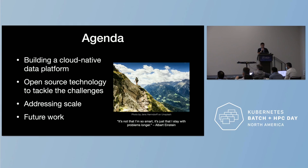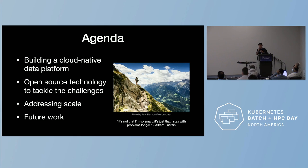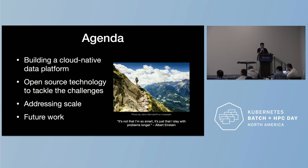Today's agenda is: first, we'll talk about how to build a cloud-native data platform — everybody is talking about cloud native, and what does it mean for a data processing platform where the backend is Spark? Second, I'll talk about the challenges we met when building the platform and how we leverage open source software to tackle them. Third, we'll discuss problems that arise when we scale up. And the last part is future work.